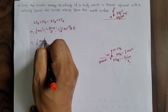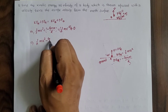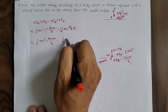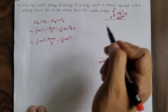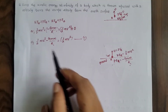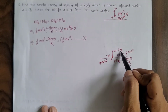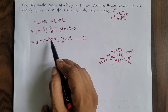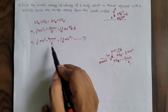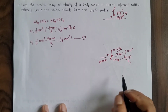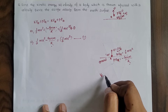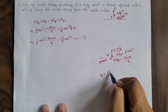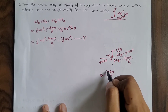Rearranging: ½mu² - GMm/r = ½mv_b², where ½mv_b² is the kinetic energy of the object at infinity. Now, for the second term, we need to express GMm/r in terms of escape velocity. As you know, the escape velocity from the Earth's surface has the value: ve = √(2GM/r).